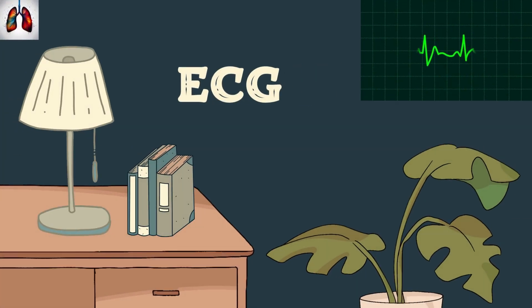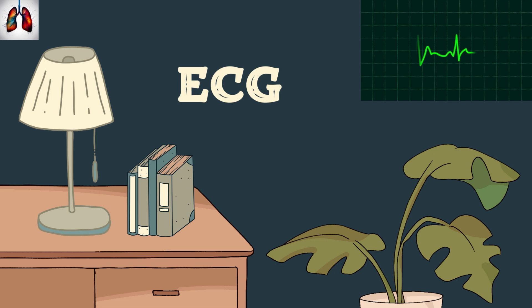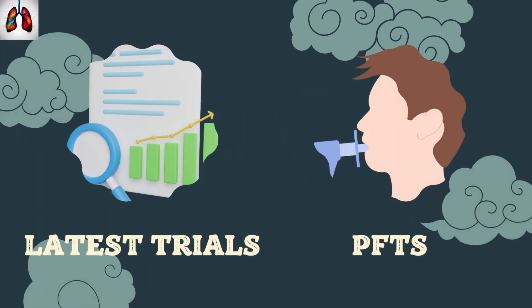ECG is also very important. They can give you an ECG, ask for the findings, differentials, and how you would proceed. Nowadays a favorite topic is the latest trials — in lung cancer or any disease — recently published famous trials. As a pulmonologist you should be aware of them, and this is a favorite question for examiners.